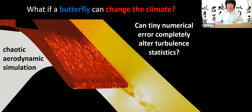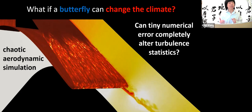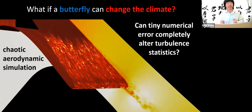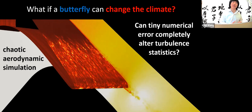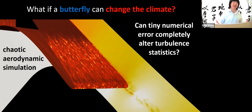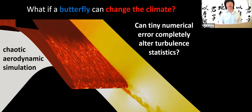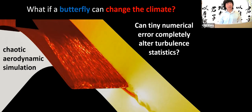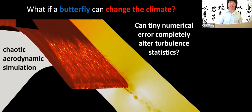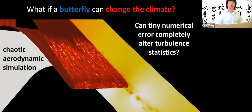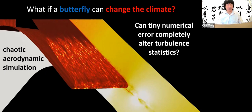The question is really important: can the butterfly change the climate? Another way to pose it is: can small numerical errors — that's analogous to the effect of the wings of a butterfly, a small perturbation — completely change the climate, which in this case is the statistics of the outcome of the simulation?